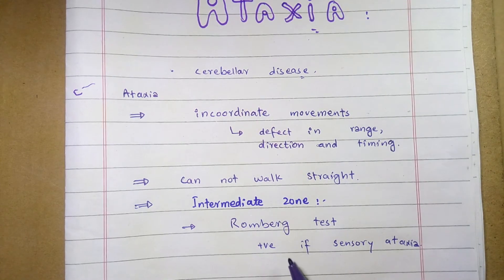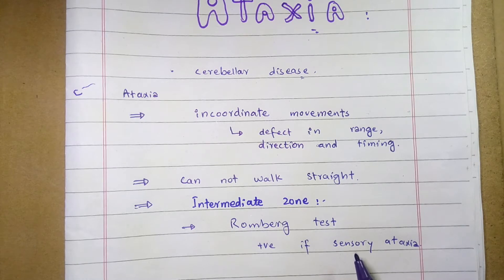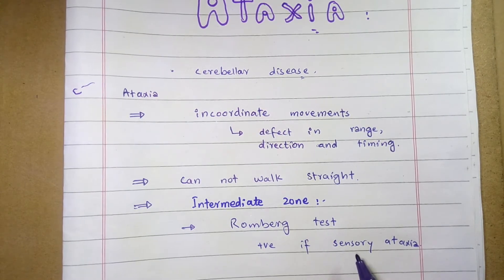The Romberg test: if the test is positive, it reveals sensory ataxia. The person is asked to close their eyes — if they can stand straight, there is no sensory ataxia. If with closed eyes the patient cannot stand straight, that indicates sensory ataxia.